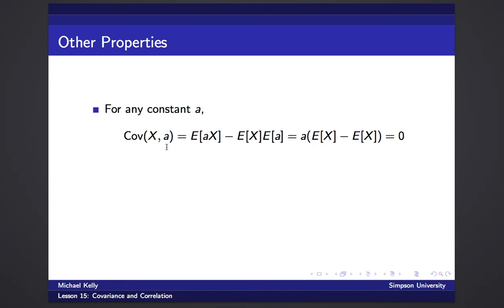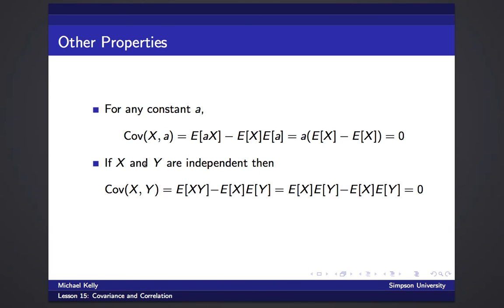If a is a constant, the covariance of X and a is E[aX] minus E[X]·E[a]. The expected value of a constant is just that constant, so factoring gives a times (E[X] minus E[X]), which is zero. If a is constant it doesn't change at all, so as X changes, a is not changing — the two are not related.